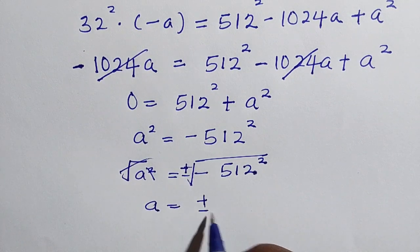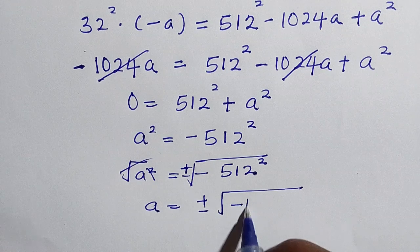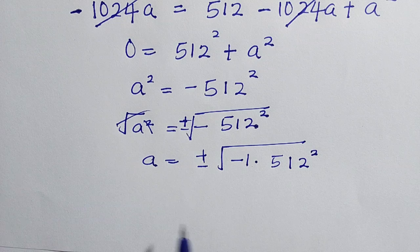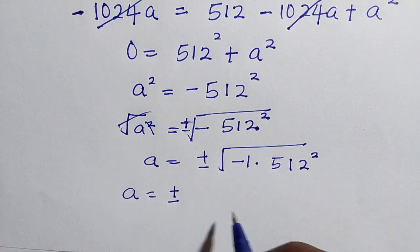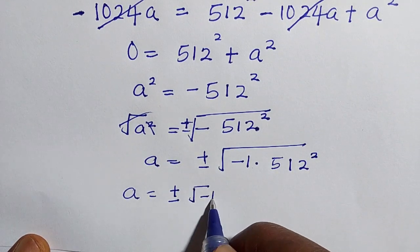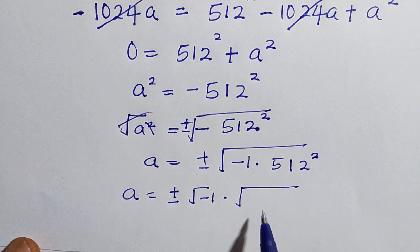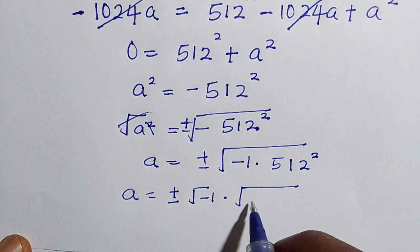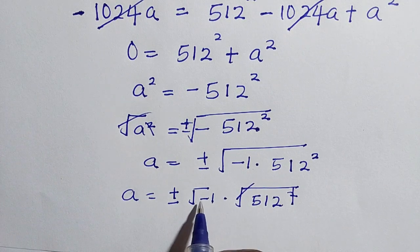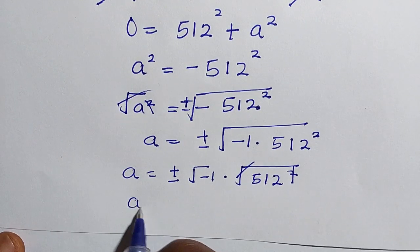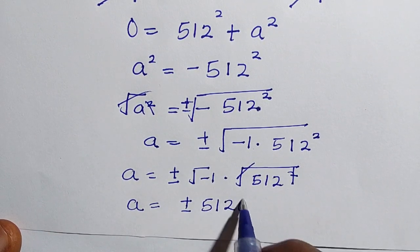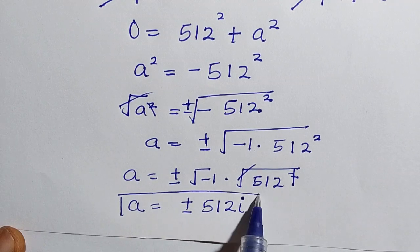Let's transfer this to the other side: a squared equals minus 512 squared. By taking the square root of both sides, and introducing plus or minus, we have a equals plus or minus the square root of minus 512 squared. We can write this as square root of minus 1 multiplied by square root of 512 squared. The square root of minus 1 is i, so a equals plus or minus 512i.